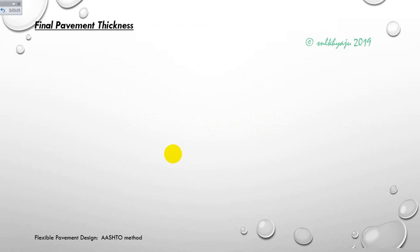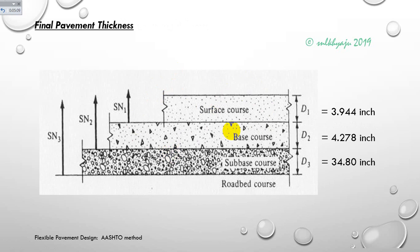Finally, the pavement thicknesses: d1 (surface/wearing course) = 3.944 inches, d2 (base course) = 4.278 inches, and d3 (subbase course) = 34.80 inches respectively.